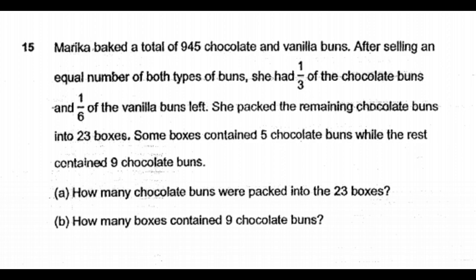Marika baked a total of 945 chocolate and vanilla buns. After selling an equal number of both types of buns, she had one-third of the chocolate buns and one-sixth of the vanilla buns left. She packed the remaining chocolate buns into 23 boxes. Some boxes contained 5 chocolate buns while the rest contained 9 chocolate buns. (a) How many chocolate buns were packed into the 23 boxes? (b) How many boxes contained 9 chocolate buns?